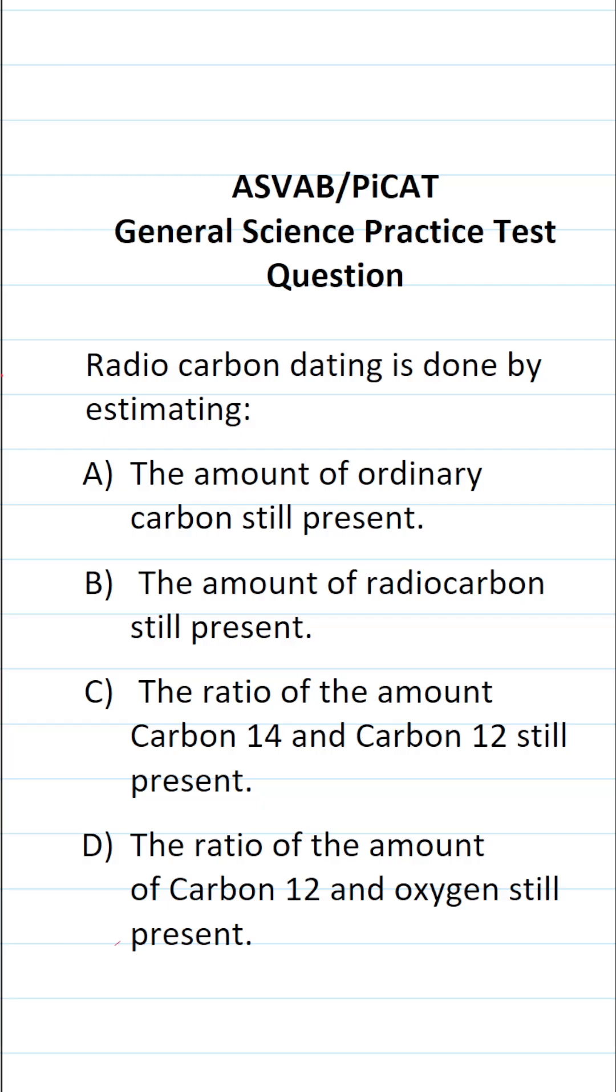So in order to date something using radiocarbon dating, what you're doing is comparing the ratio of the amount of carbon-14, which decays radioactively, to carbon-12, which is constant. And the bigger that ratio is, the older the specimen is. So the correct answer to this one: the ratio of the amount of carbon-14 and carbon-12 still present.